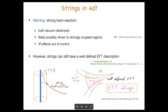Quite generically, the infrared regime is out of control without specifying the infrared completion of the configuration. One common solution is to imagine, rather than an infinitely long string, a very large loop — closing it in a loop sets an infrared distance by the length of the loop. Or one could complete it by introducing other strings in such a way that you get something consistent, with mutually non-local strings. But generically, you cannot just put a straight string in a vacuum.